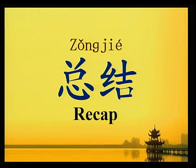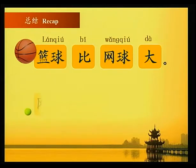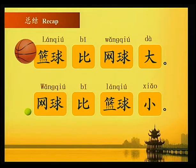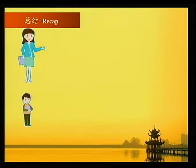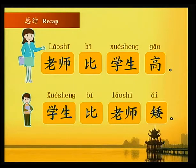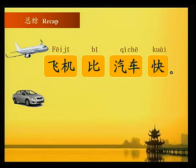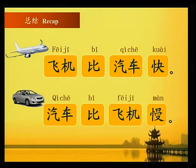总结 Recap: 篮球比网球大，网球比篮球小，老师比学生高，学生比老师矮，飞机比汽车快，汽车比飞机慢。今天我们学了语言点 A比B Plus Adjective，希望你喜欢这堂课。Today we have learned about the sentence structure A比B Plus Adjective. Hope you have enjoyed this lesson. 再见！